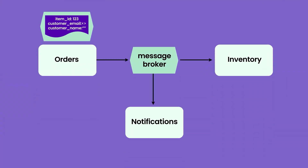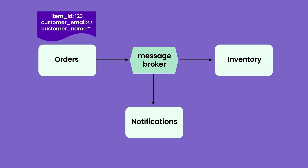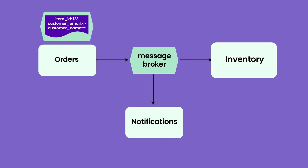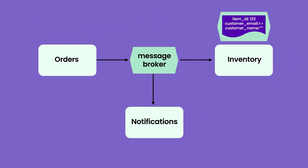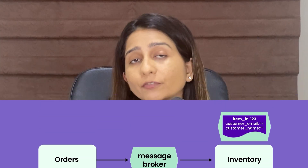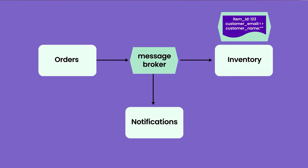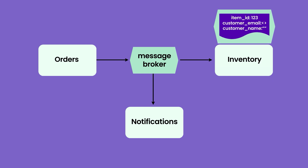One way to solve that problem is to send customer email and customer name in the same event. The order service emits an event saying order is created, with the item ID, customer email and name. When inventory is consuming this event, it doesn't need to know about the customer details — we are giving extra information to inventory which it does not need. The notification service does need that data, so it is useful for it. The problem here is that we are emitting only one event with a lot of data, which might be useful to some consuming services and not useful to others.